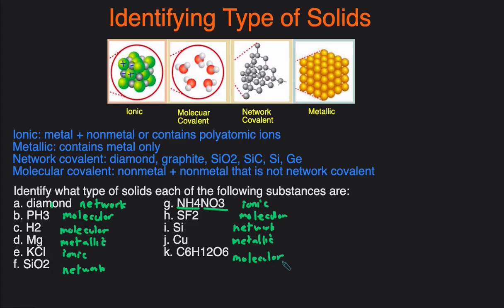And that's how you can easily determine what's ionic, molecular covalent, network covalent, and metallic. So just go through the criteria. If it's just a metal, it's going to be metallic. If it's a metal and non-metal or contains a polyatomic ion, then it's ionic. If it's one of these, then it's going to be network covalent. And if it's non-metals only, then it's going to be molecular covalent.